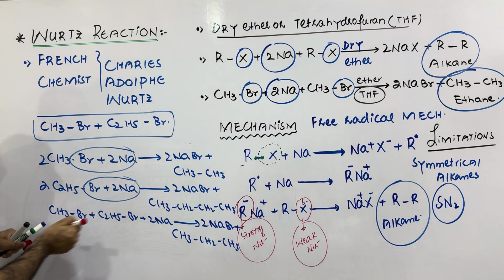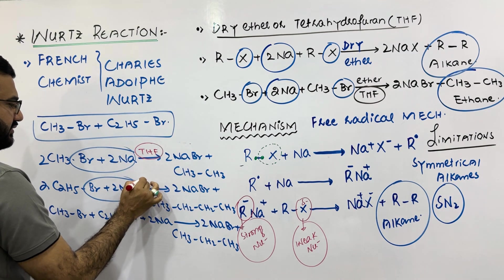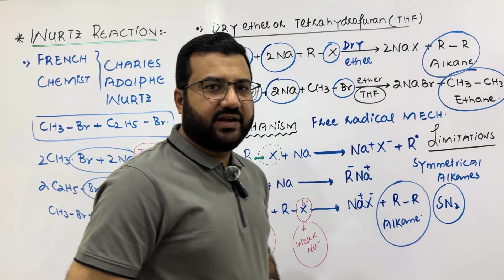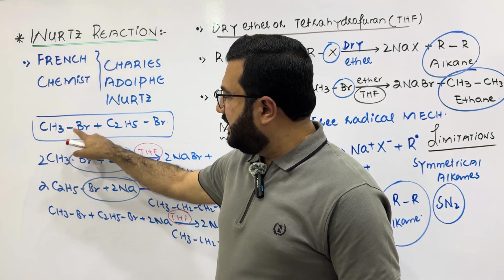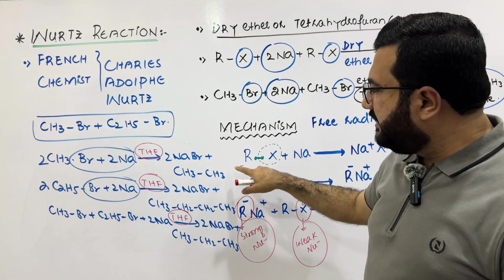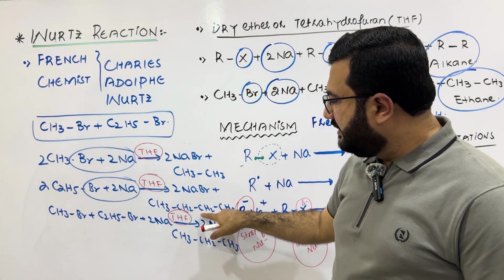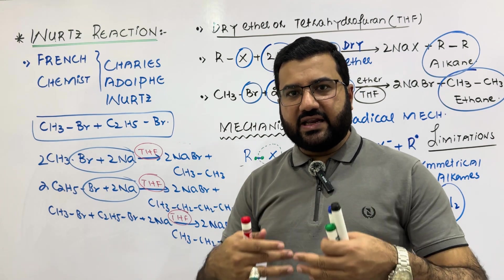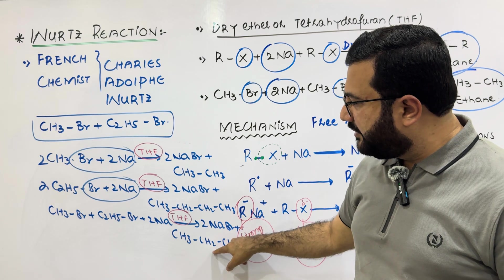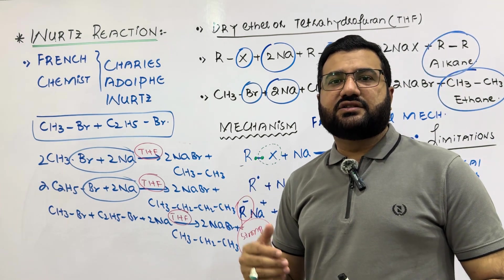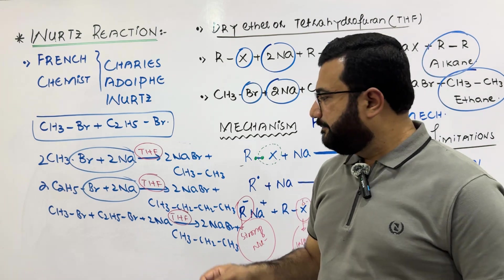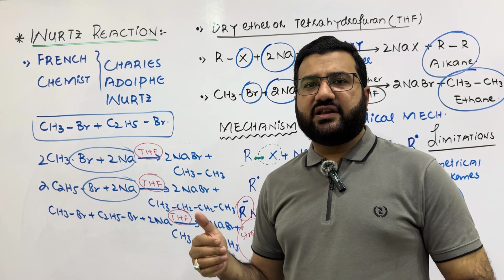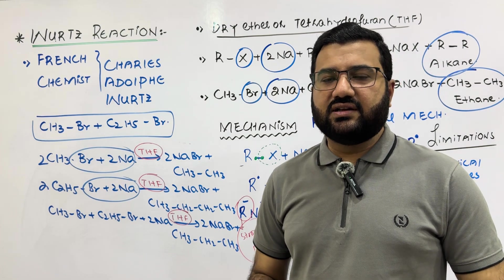All these reactions take place in the presence of tetrahydrofuran or dry ether — always write the reaction conditions above the arrow, which is very important in any organic reaction. So if we use a mixture of methyl bromide and ethyl bromide in the Wurtz reaction, there will be the possibility of three types of alkanes: ethane, butane, and propane. A mixture of products will be created, and it will be very difficult to separate them because their boiling points are very close to each other. Therefore, using two different types of alkyl halides in the Wurtz reaction is never advisable.